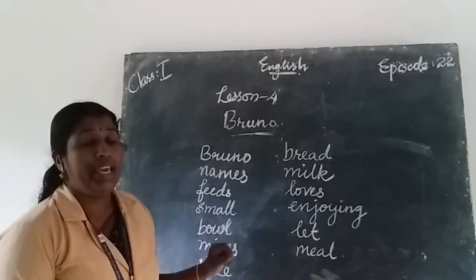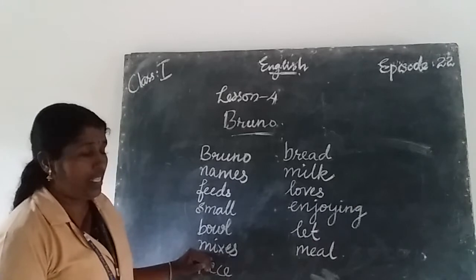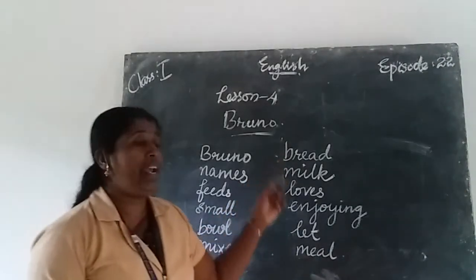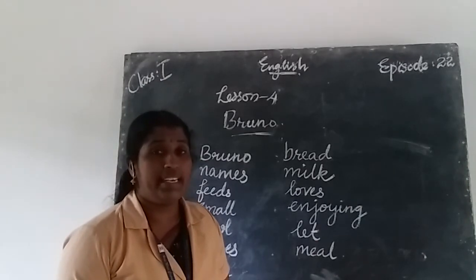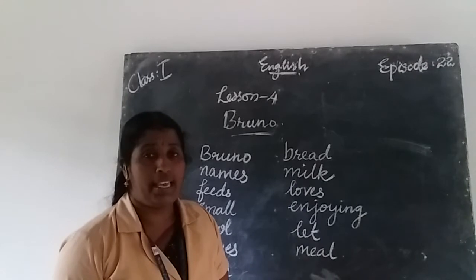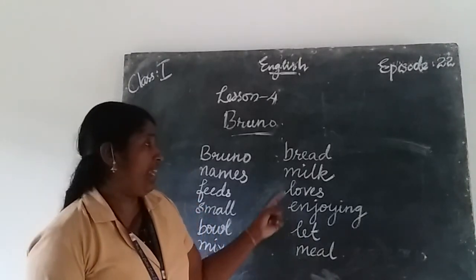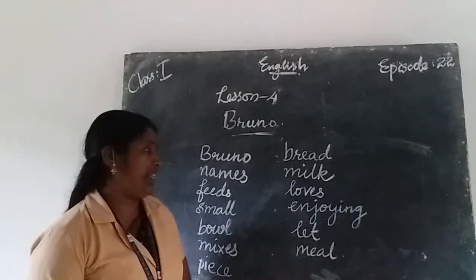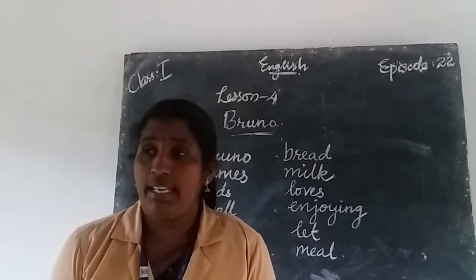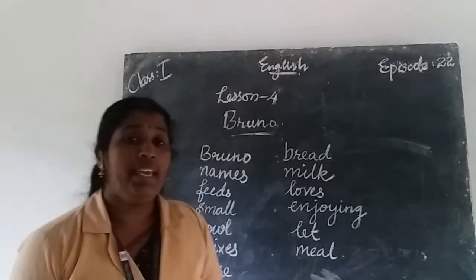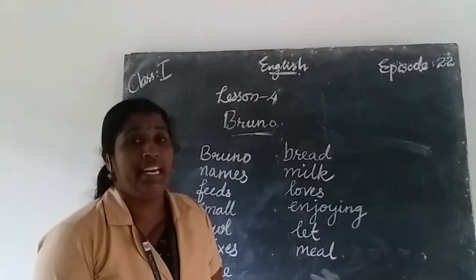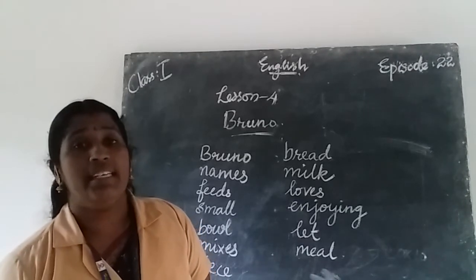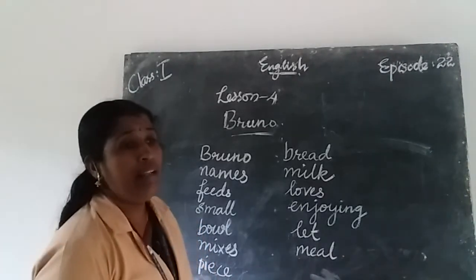Key vocabulary from paragraph two: Bruno B-R-U-N-O, names N-A-M-E-S, feeds F-E-E-D-S, small S-M-A-L-L, bowl B-O-W-L, mixes M-I-X-E-S, piece P-I-E-C-E, bread B-R-E-A-D, milk M-I-L-K, loves L-O-V-E-S, enjoying E-N-J-O-Y-I-N-G, let L-E-T, meal M-E-A-L.